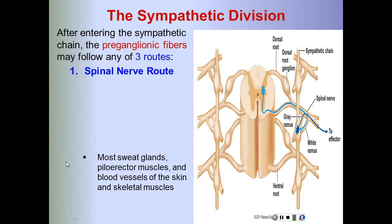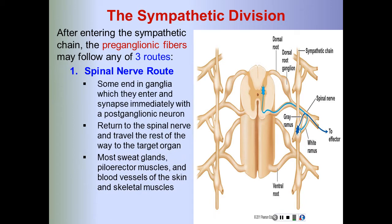After entering the sympathetic chain, pre-ganglionic fibers may follow three routes. Some end in the ganglion at that level and synapse immediately with the post-ganglionic neuron. Some travel up and down the chain and synapse in ganglia at other levels — this is the only route by which cervical, sacral, and coccygeal ganglia receive their input. Some pass through the chain without synapsing and continue as splanchnic nerves.